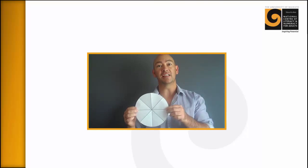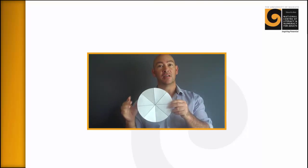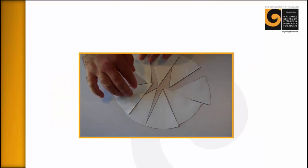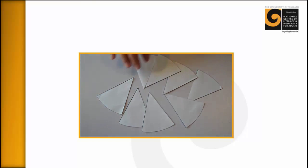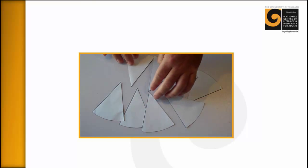Next thing you do is you're going to ask the learners to cut out each of those sectors and arrange them on their desk. So the learners are arranging these sectors on their desk, and the idea is they're trying to make something that approximates a rectangle.